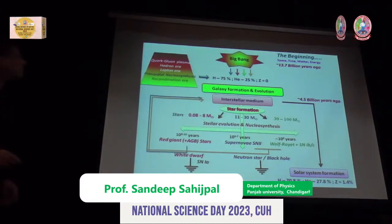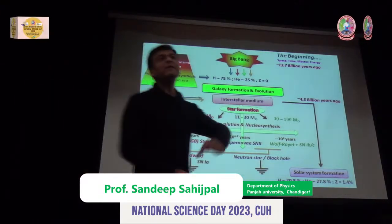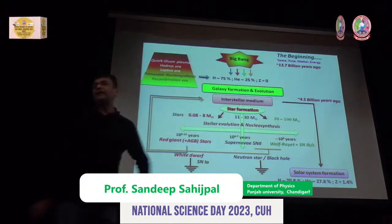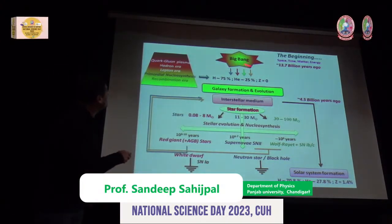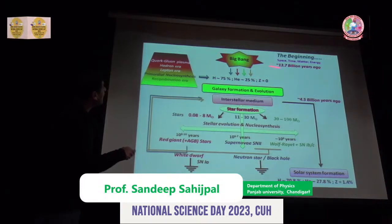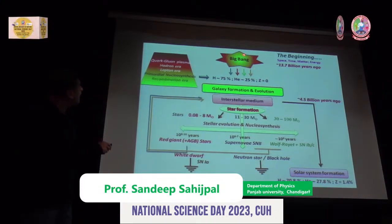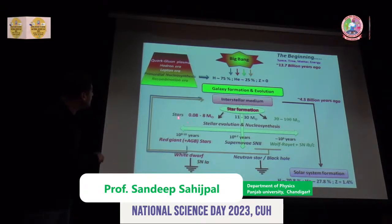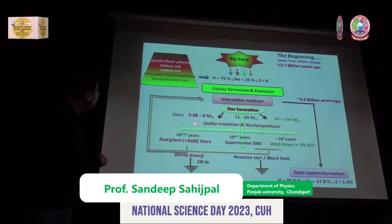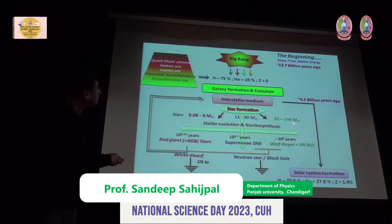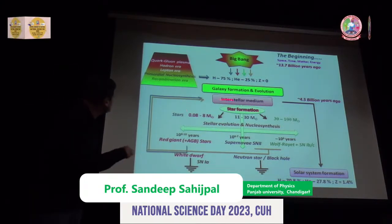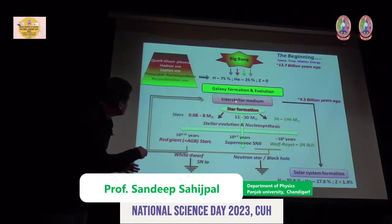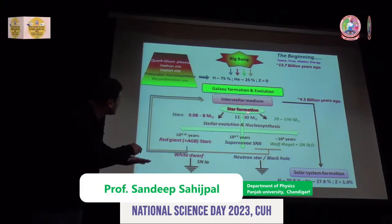If you were to represent the entire evolution of our universe in a single slide, this is the algorithm: we started with the Big Bang 13.7 billion years ago, galaxy formation occurred, and within those galaxies stars are born — low mass stars, intermediate mass stars, and massive stars. The stars evolve, throw matter into space, and the next generation of stars are born.